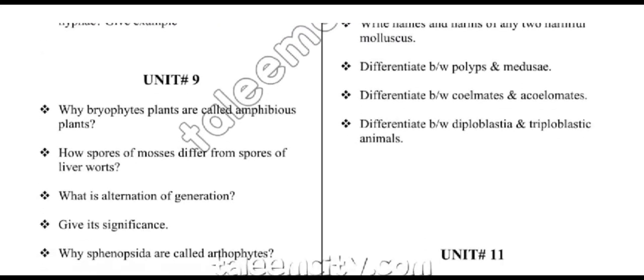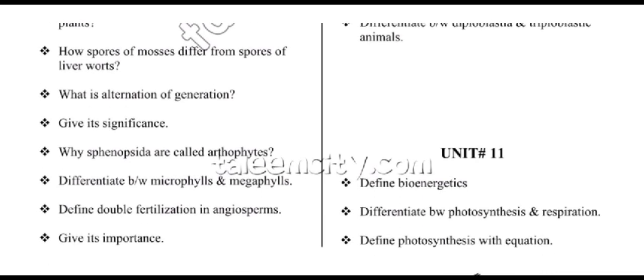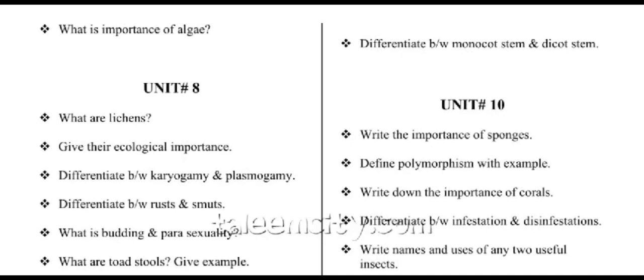From unit number nine, we have: why bryophyte plants are called amphibian plants; how spores of mosses differ from the spores of liverworts; what is alternation of generation and its significance; why Equisetum and Selaginella are called arthrophytes; differentiate between microphylls and megaphylls; define double fertilization in angiosperms and give its importance; differentiate between monocot stem and dicot stem.